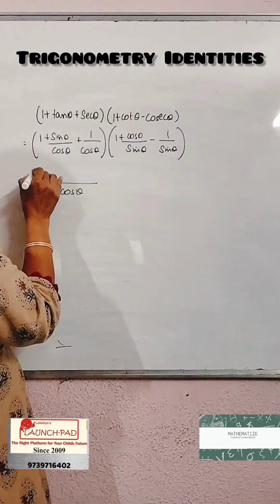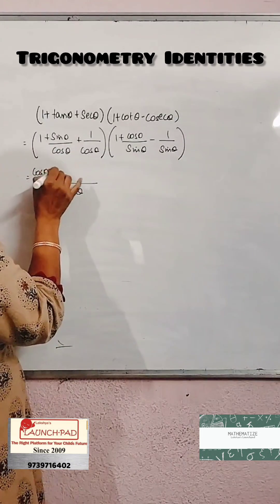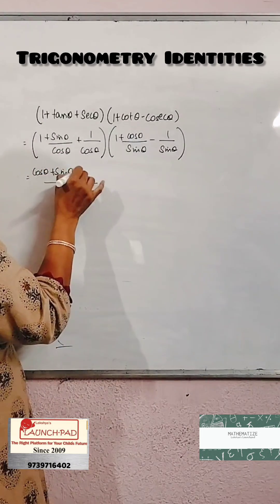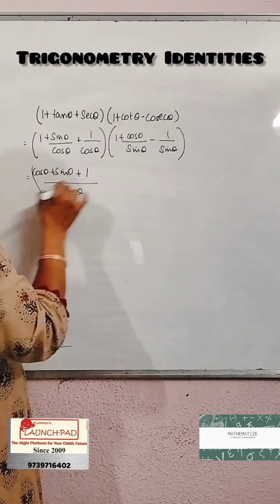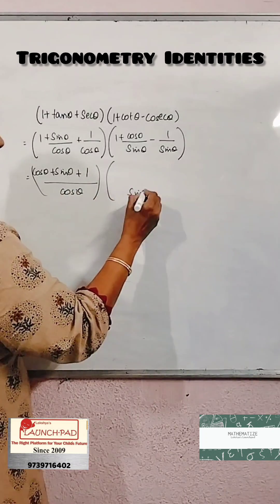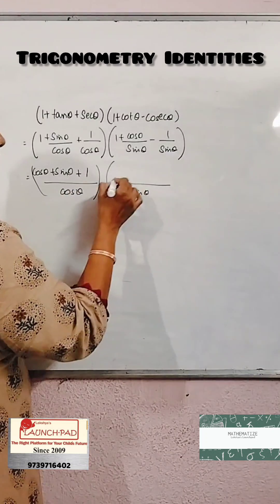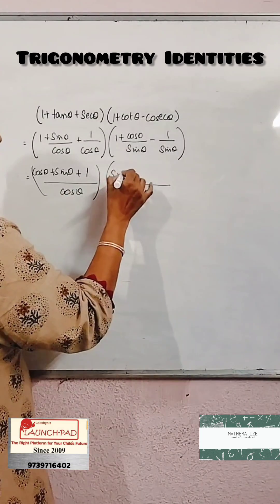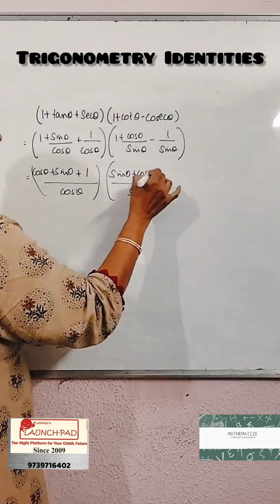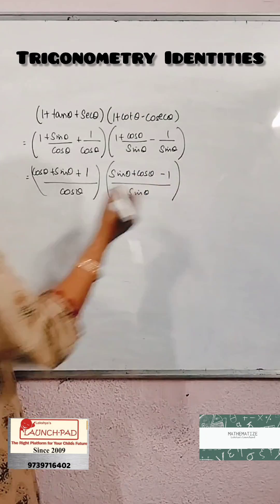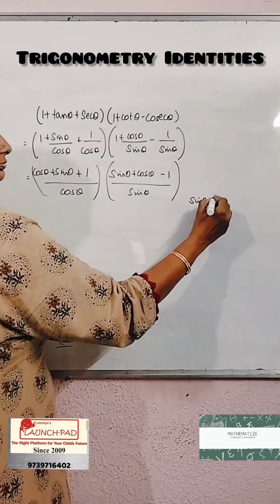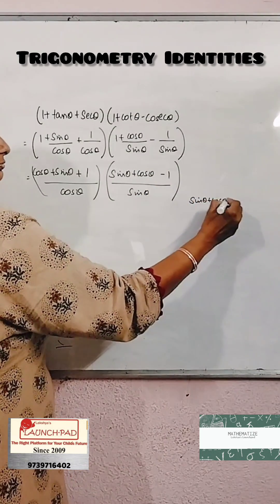Taking LCM as cos θ for the first bracket gives (cos θ + sin θ + 1) over cos θ. For the second bracket, taking LCM as sin θ gives (sin θ + cos θ - 1) over sin θ.